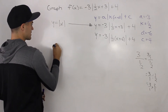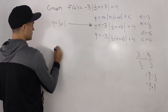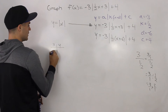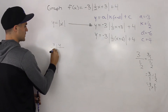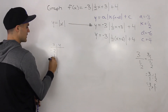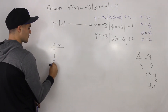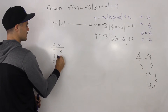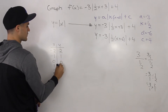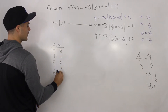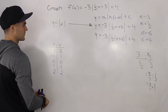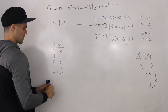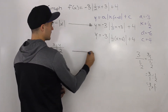We take the table of values for the parent absolute value function. The x values are negative two, negative one, zero, one, and two, with corresponding y values of positive two, positive one, zero, positive one, and positive two. Now we're going to transform these using our transformation values.